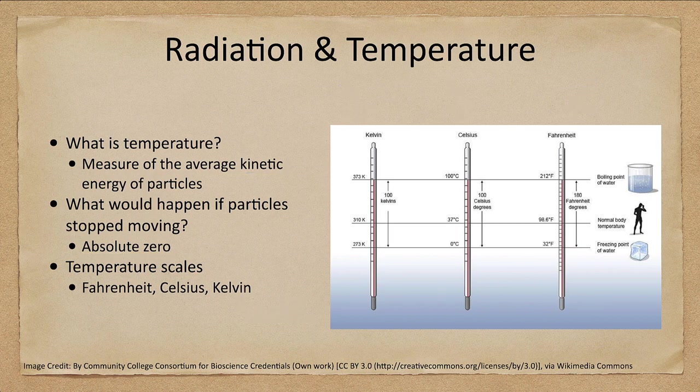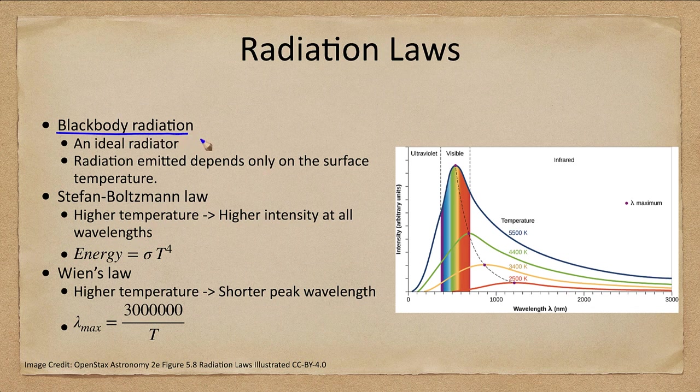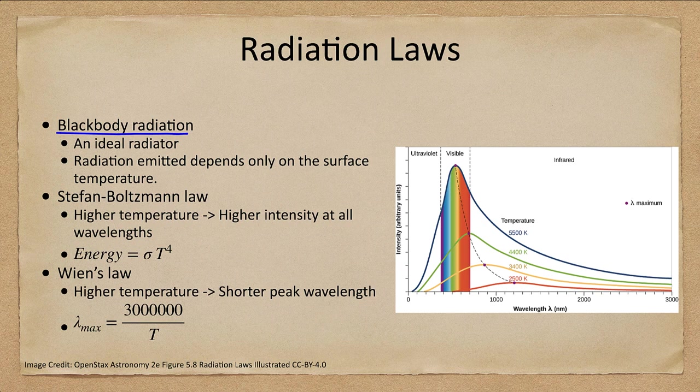Now, let's go ahead and look at those radiation laws and see what we have here. First of all, we want to talk about blackbody radiation. These are ideal radiators. And essentially, what a blackbody does is it absorbs all the light that strikes its surface and then re-emits light dependent only on the surface temperature.